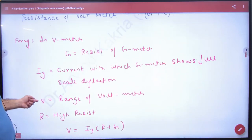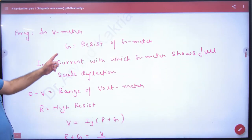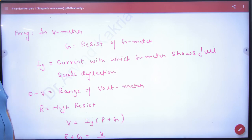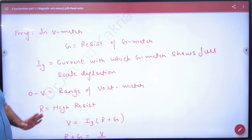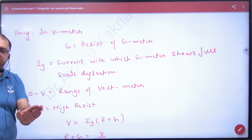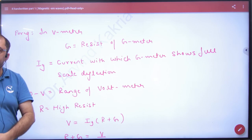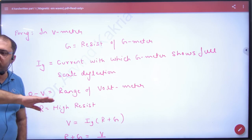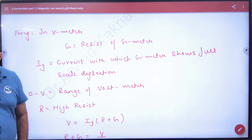In the voltmeter, G is the resistance of the galvanometer. Ig means the current of the galvanometer — the current that the galvanometer measures. It is represented by Ig, which shows a full-scale deflection. Full-scale deflection means the galvanometer reads its maximum value, Ig.